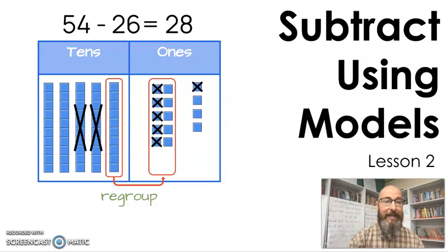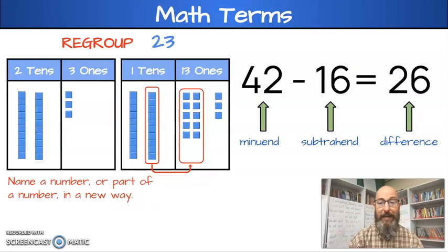Today, what we're going to look at is using models to subtract. Before we get started, I do want to make sure I review some terms that we're going to use today. Of course, these are the ones we've been going over for a few weeks now. We have minuend, which is the bigger number, the larger number in a subtraction question. We have the subtrahend, which is the smaller number in a subtraction question. That's the number you're subtracting from the minuend. It's what you're taking away.